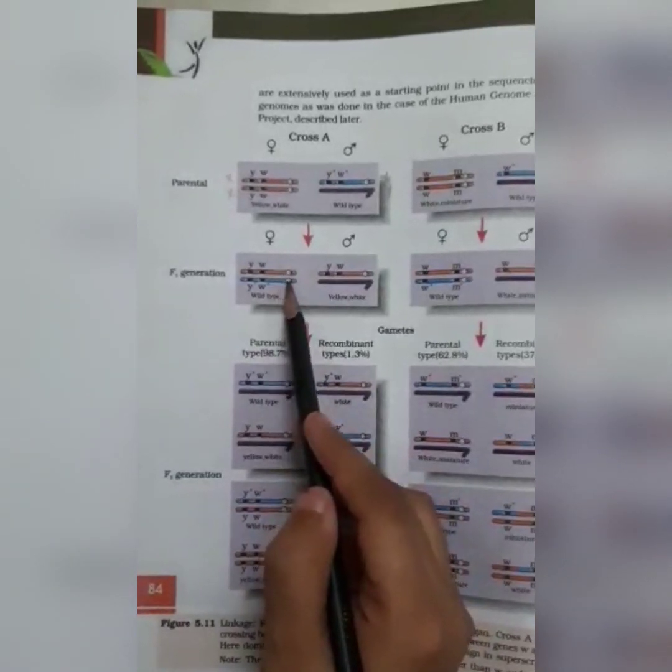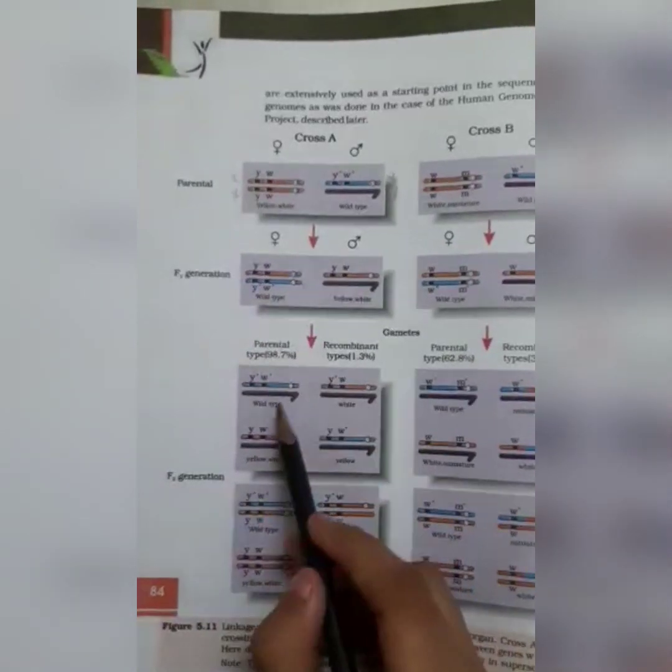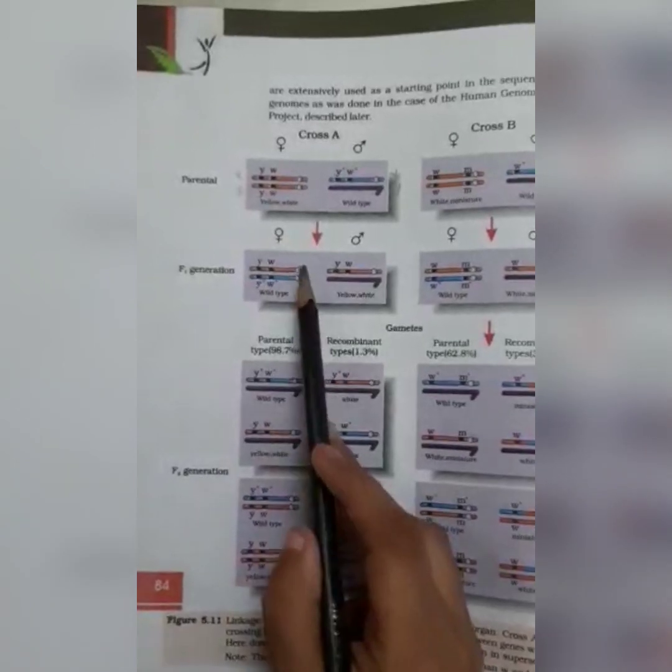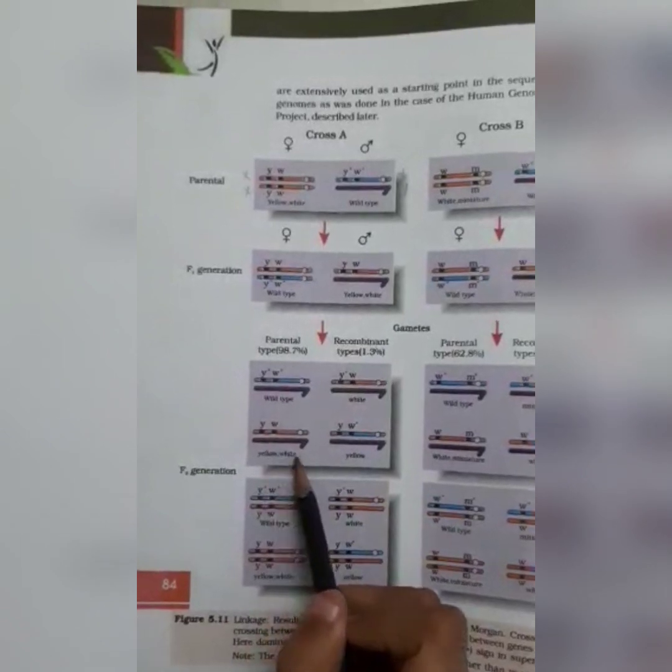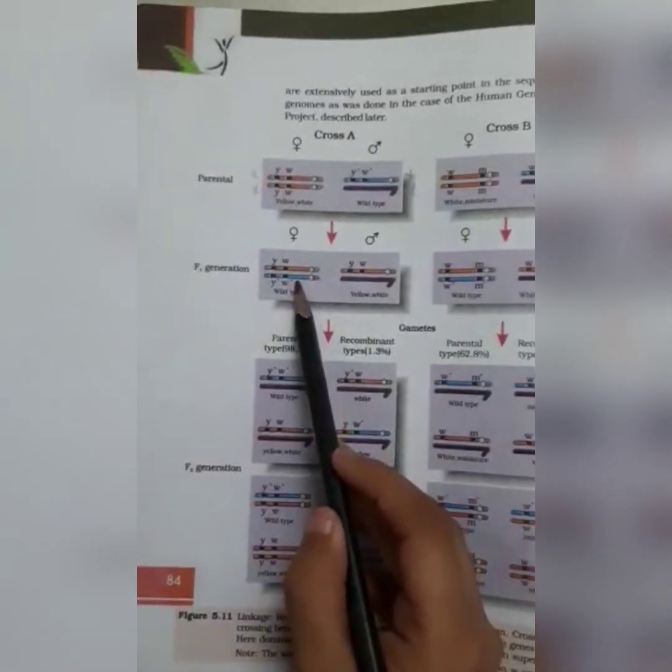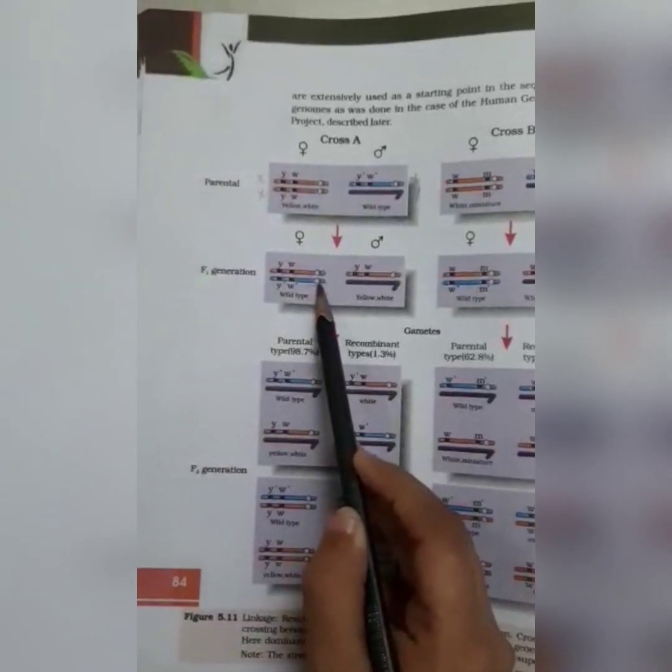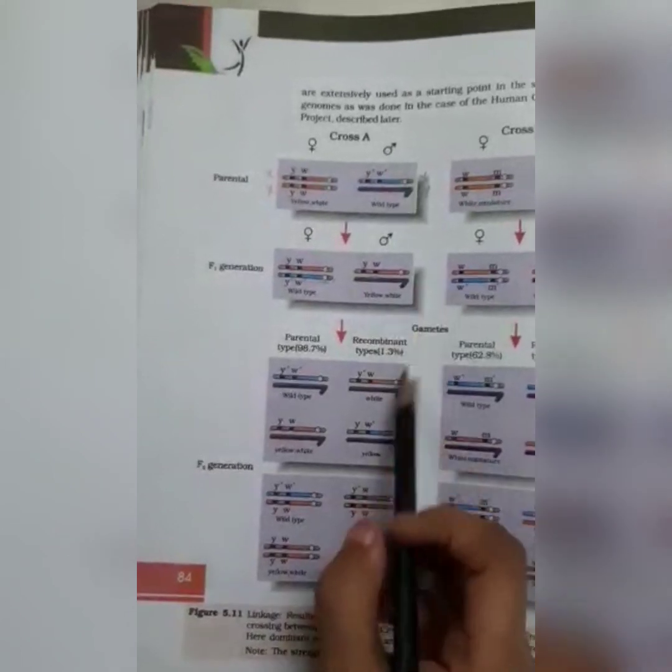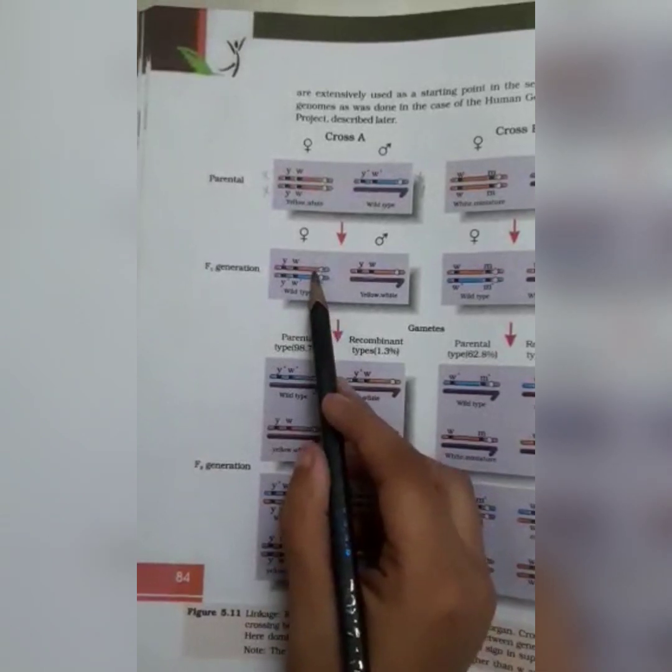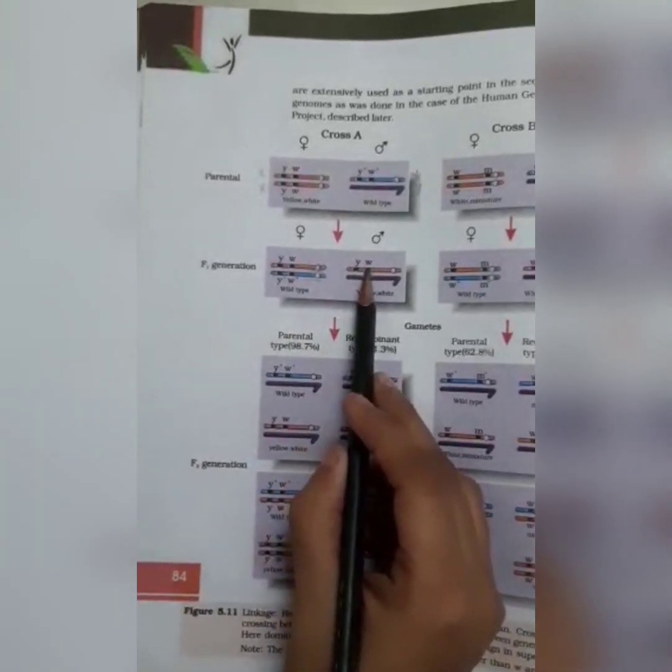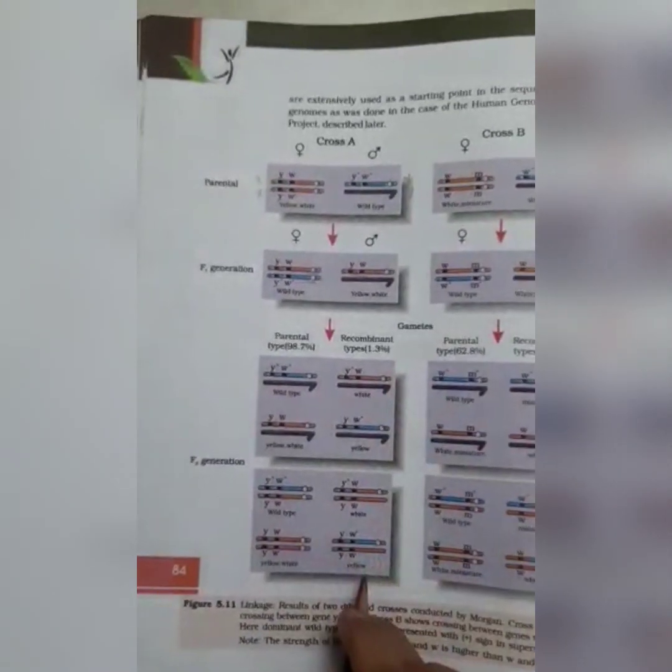When this is crossed with this one, we will get the wild type. When this is crossed with this one, we will get yellow body and white eye. When the X chromosome of the female is crossed with X chromosome of male, we will get this one. And when X chromosome of female and Y chromosome of male is crossed, we will get this. And these are the recombinations.